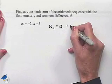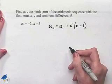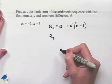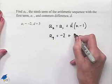plus d times (n - 1). Now let's substitute in our known values. We're trying to find a₉, which means n = 9. a₁ = -2, our d value is 3, and again our n value is 9.